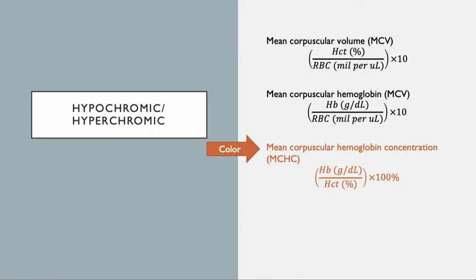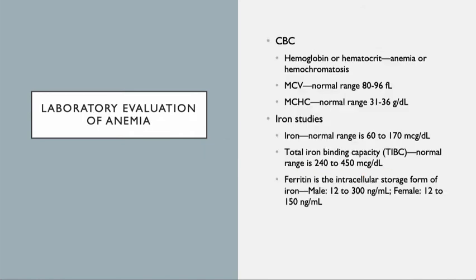The color then comes from understanding the MCHC — that is the concentration of hemoglobin in the average red blood cell. When we're talking about the color of the red blood cells, the MCHC tells us whether this is a hypochromic anemia, if the MCHC is low, or hyperchromic, if the MCHC is high.